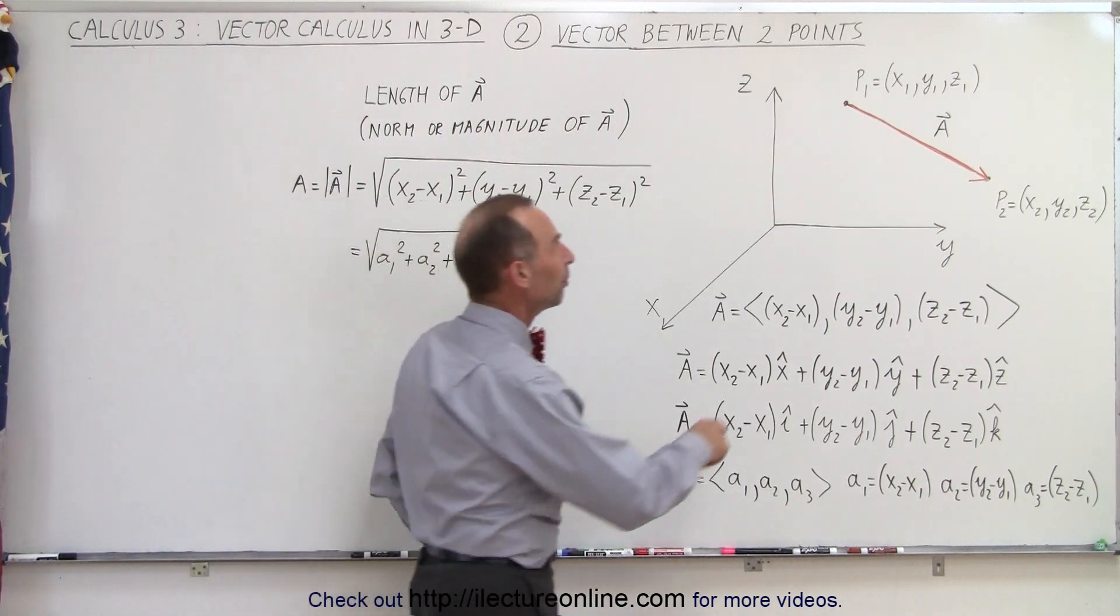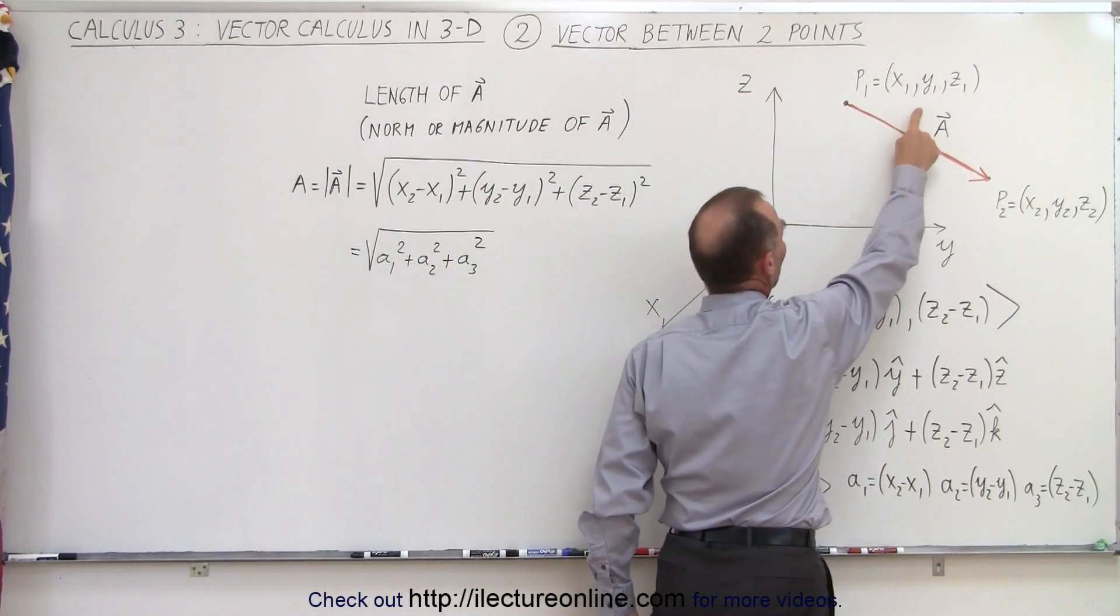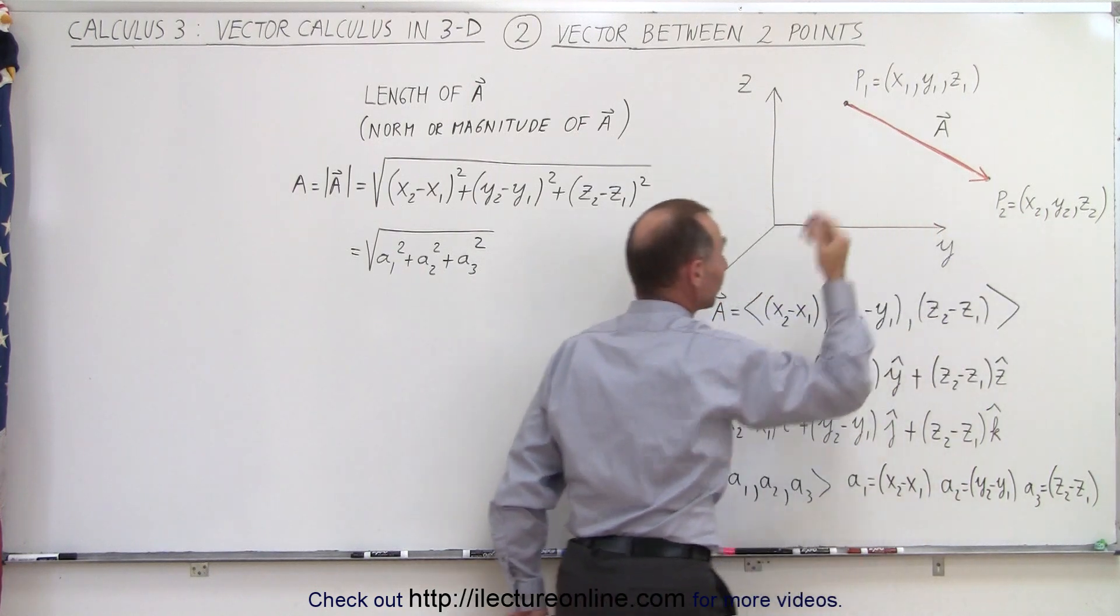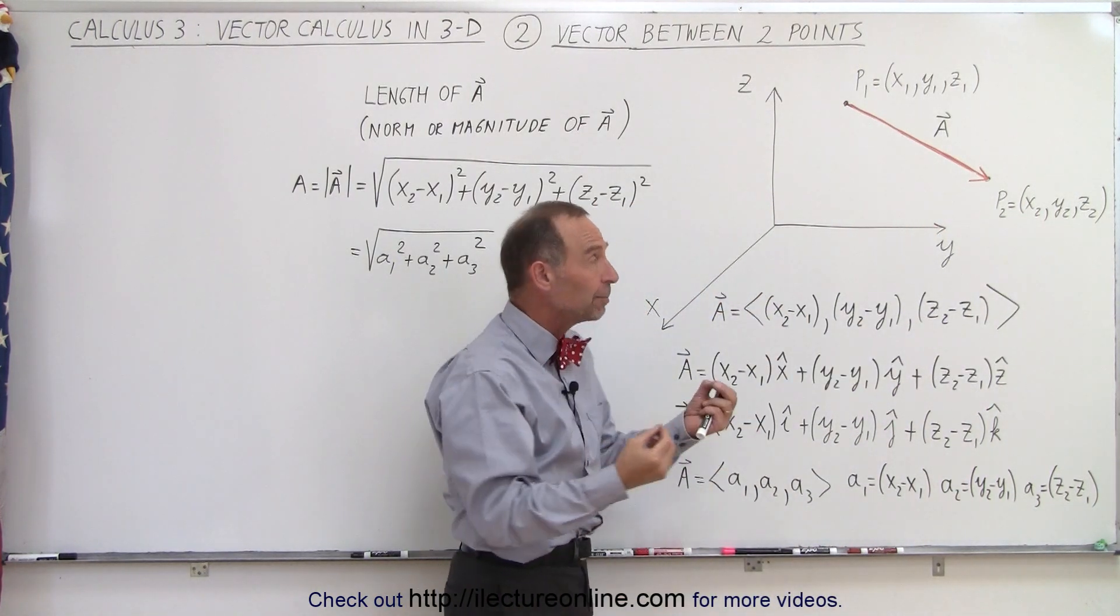So we have the first point, point 1, which is defined as x1, y1, and z1, and the second point defined as x2, y2, and z2. Those can be, of course, any numbers, any points in space.